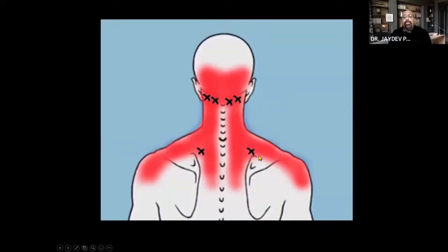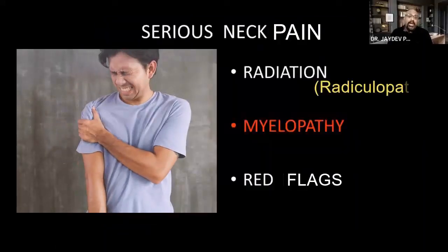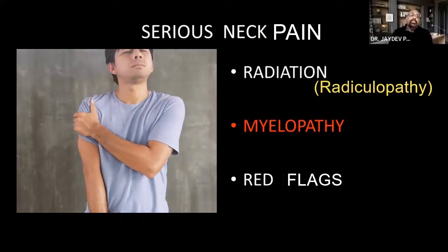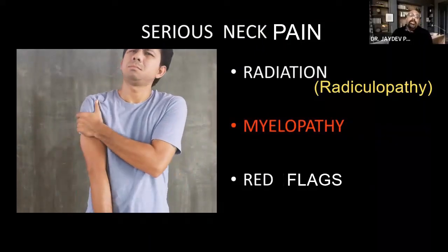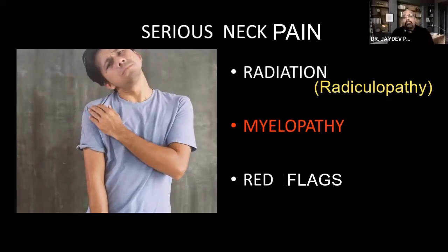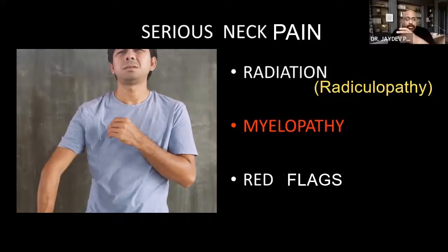Patients with cervical spondylotic pain typically describe severe stiffness and pain in the neck and trapezial area. One must take a good history and perform a thorough examination, as other conditions can cause similar pain. Neck pain becomes serious when it radiates into the arm, forearm, hand, or fingers — this could indicate radiculopathy and must be taken seriously.